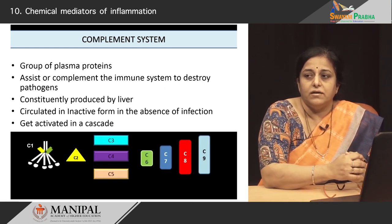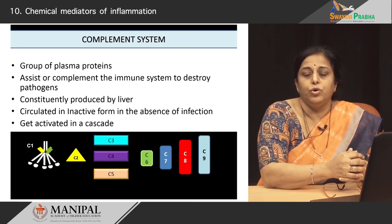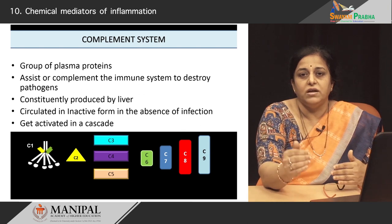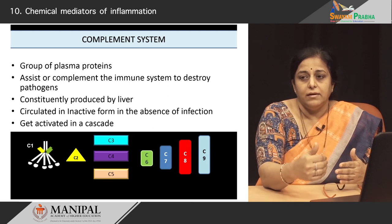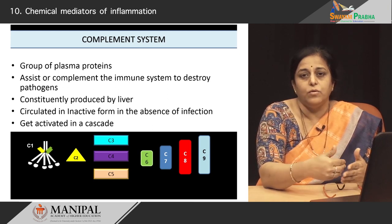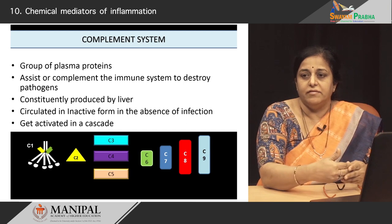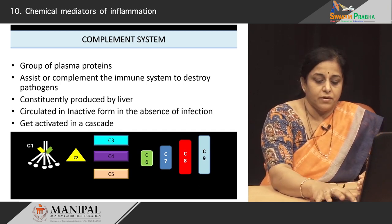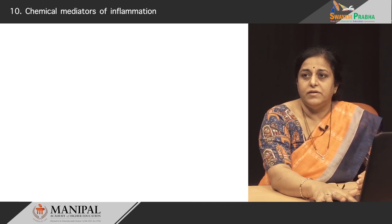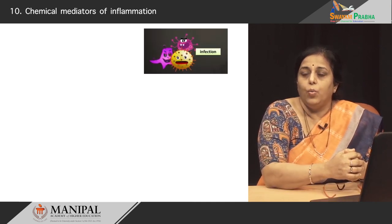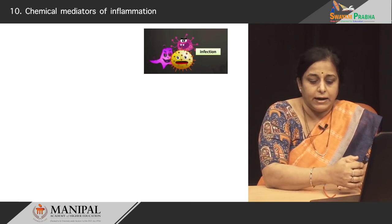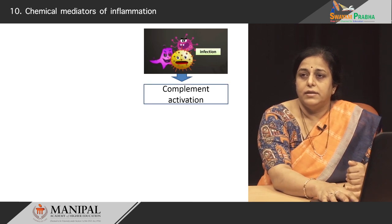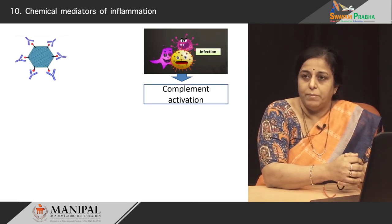There are nine complement proteins, C1 to C9. This naming does not reflect the sequence in which they are generated; it reflects the order in which they were discovered. C1 is generated first. The complements are activated whenever there is an infection — infection is the trigger for complement activation. There are three mechanisms by which the complements are activated.